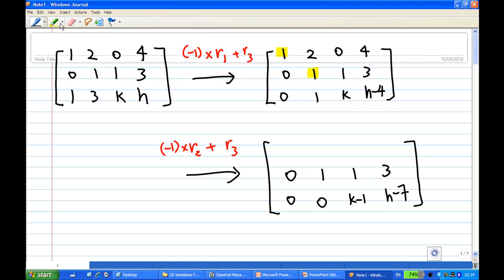And then I want to make sure that entries above leading 1 are 0. So I can take the second row, times minus 2, add to the first row. This will give me (1, 0, -2, -2).